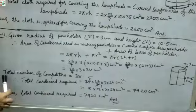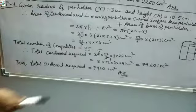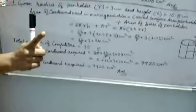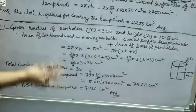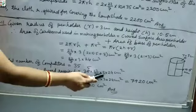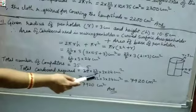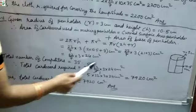We leave the fraction as is because 35 competitors are needed and 35 is divisible by 7. Total cardboard = 35 × 22/7 × 3 × 24 = 5 × 22 × 3 × 24 = 7,920 cm². This much area of cardboard is required for the competition.